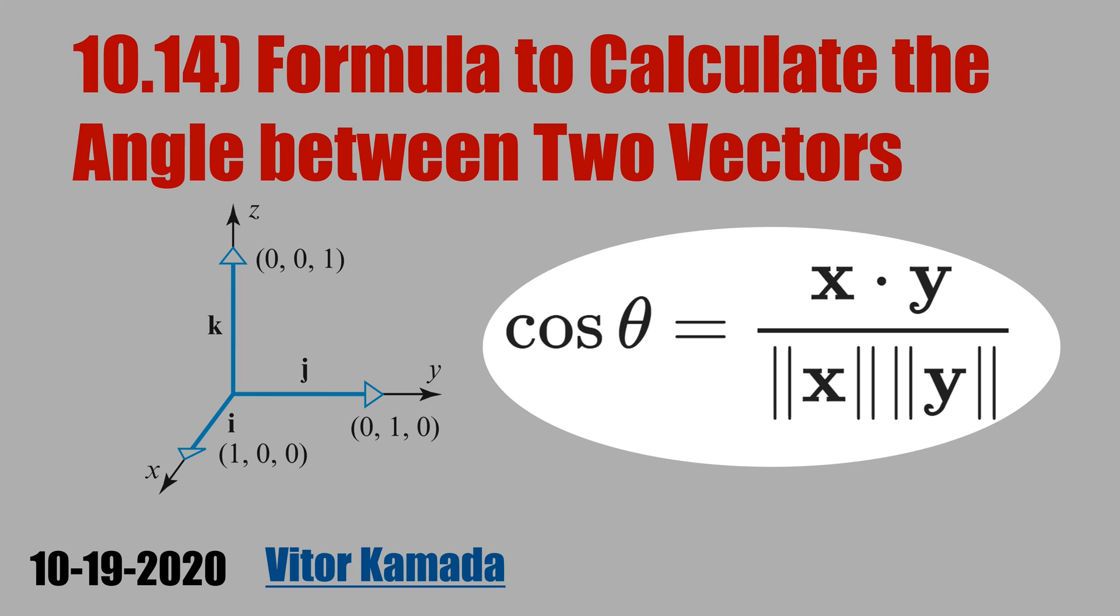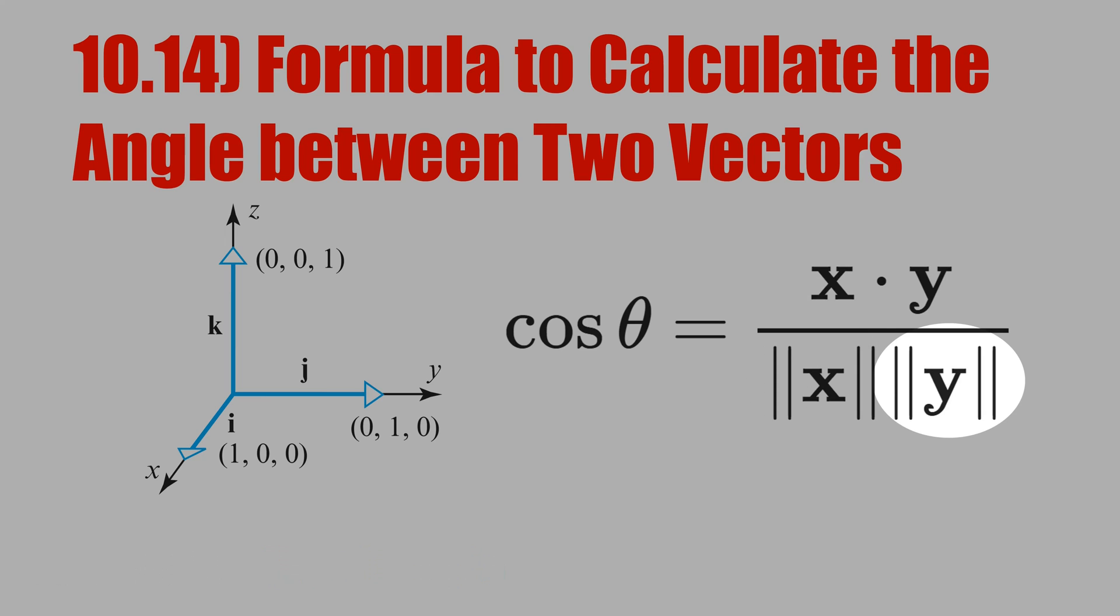This is the formula to calculate the angle between two vectors. Cosine theta is the dot product of the vectors x and y divided by the norm of x and the norm of y.